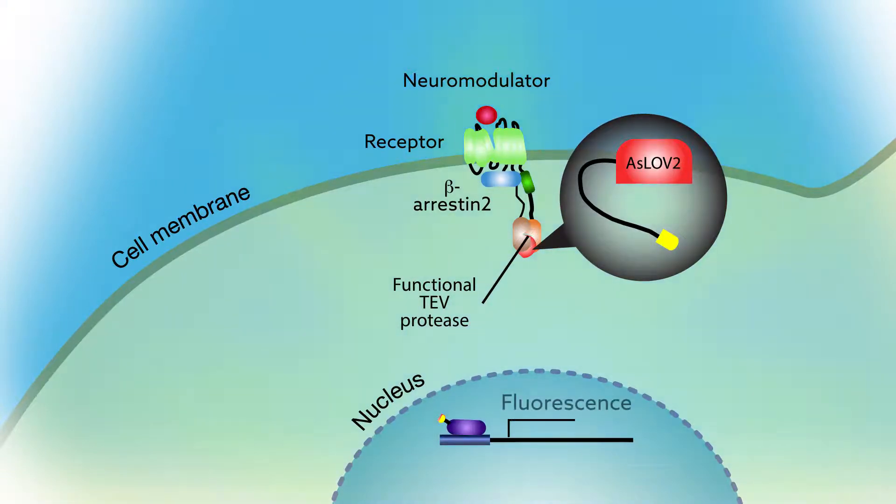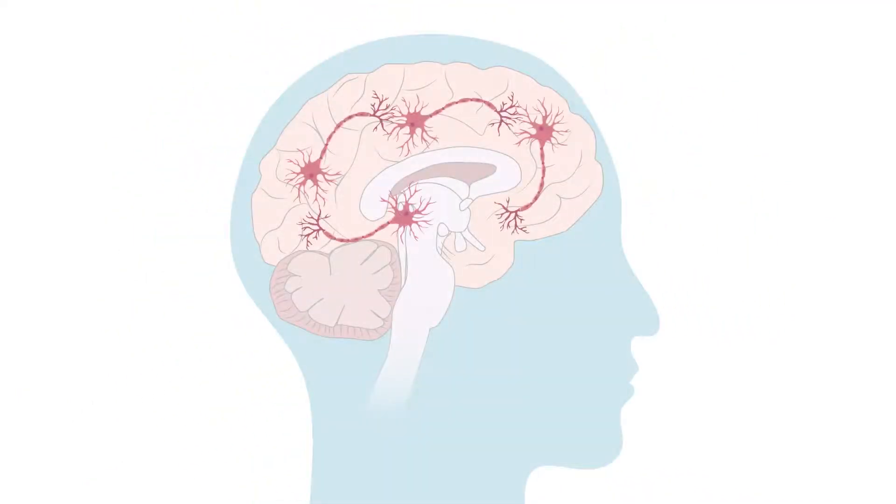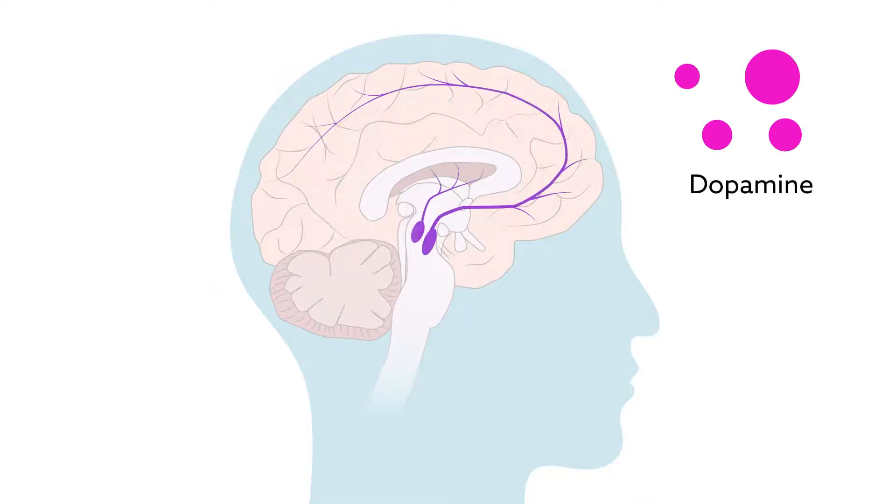The researchers demonstrated the advantages of the improved sensor system by using it to identify the cells involved in reward-based learning. This form of learning depends on the well-known neuromodulator dopamine, which is released in anticipation of rewards like food or praise.